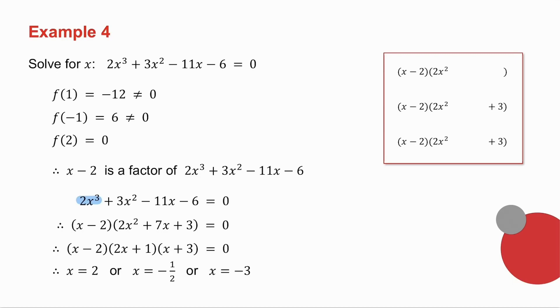I've got to get x minus 2 times what. There's a 2x cubed. x times what is 2x cubed, it's 2x squared. On the end is minus 6. Minus 2 times what is minus 6, it's plus 3. I need to get a plus 3x squared. That is minus 4x squared. I need a plus 3x squared, so that must be a plus 7x squared, because minus 4x squared plus 7x squared is plus 3x squared. So that's plus 7x. I check: I get plus 3x there, I get minus 14x, together they give me minus 11x.